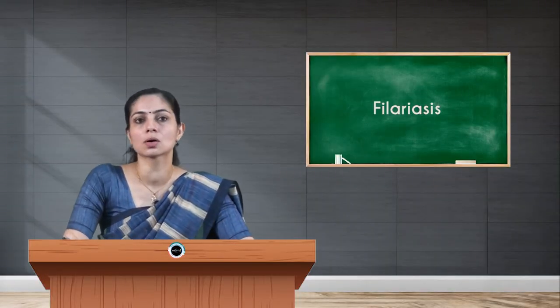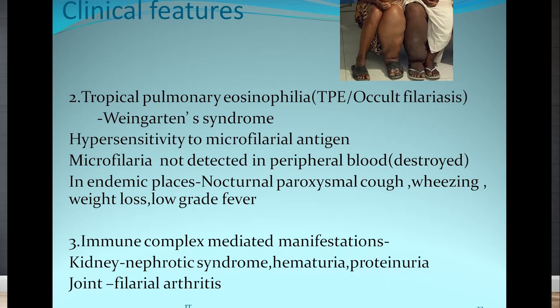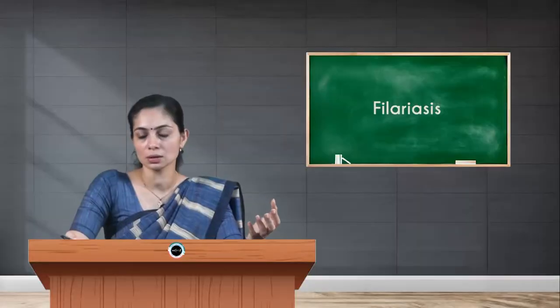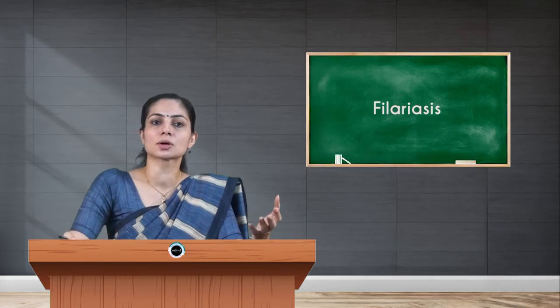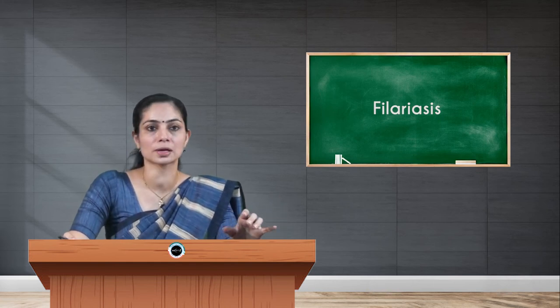Tropical pulmonary eosinophilia, or occult filariasis, can happen because of hypersensitivity towards the microfilarial antigen. Here, microfilaria is not detected in peripheral blood as it is destroyed, but the patient shows nocturnal paroxysmal cough, wheezing, weight loss, and low-grade fever. A third reaction involves immune complex-mediated manifestations in the kidney or joints. The distinction is: in classical filariasis, inflammatory changes happen due to the developing and adult worm, whereas in occult filariasis it is mainly due to hypersensitivity reaction towards the microfilarial antigen.